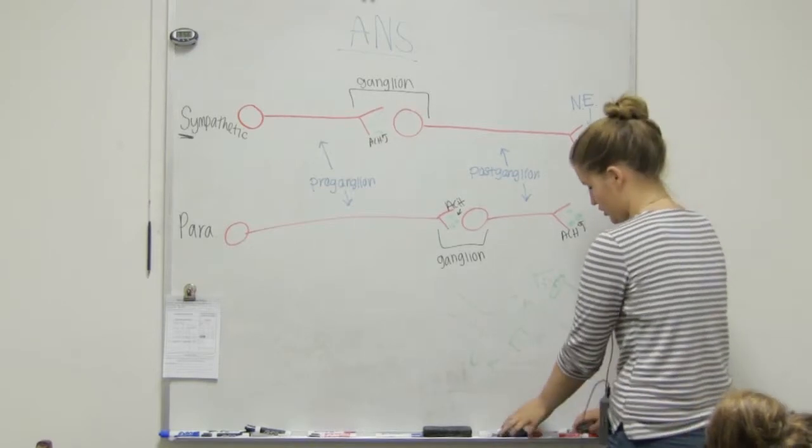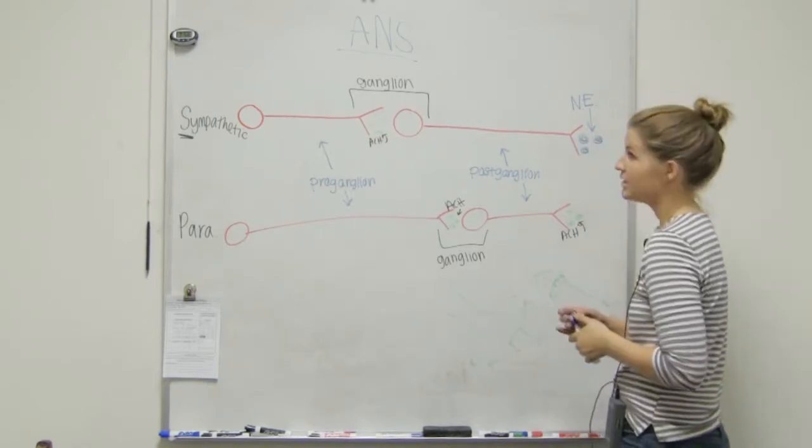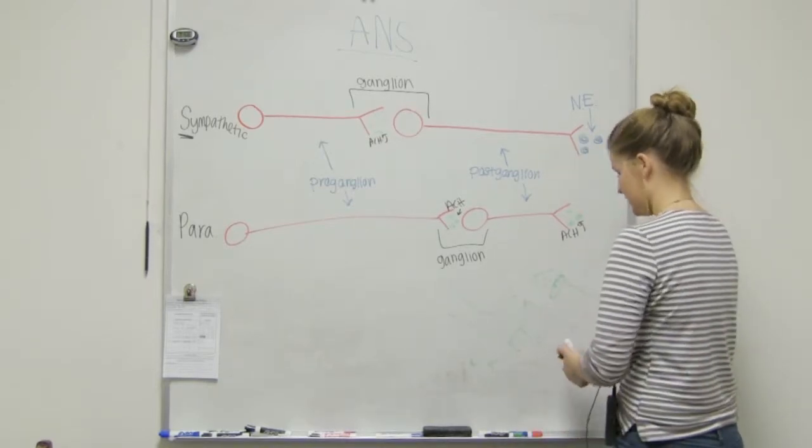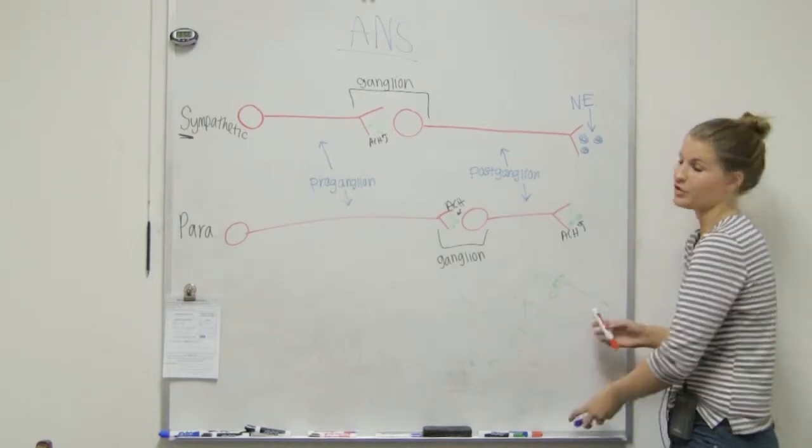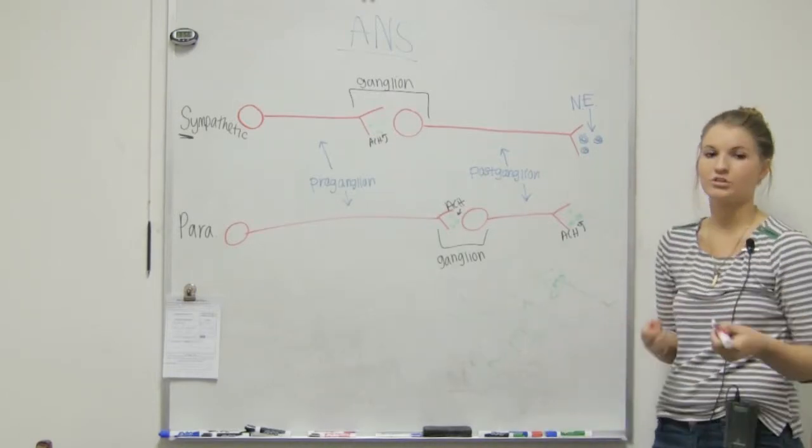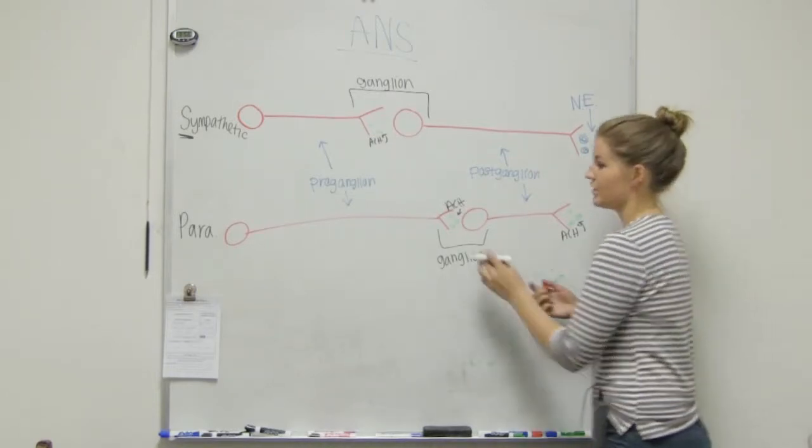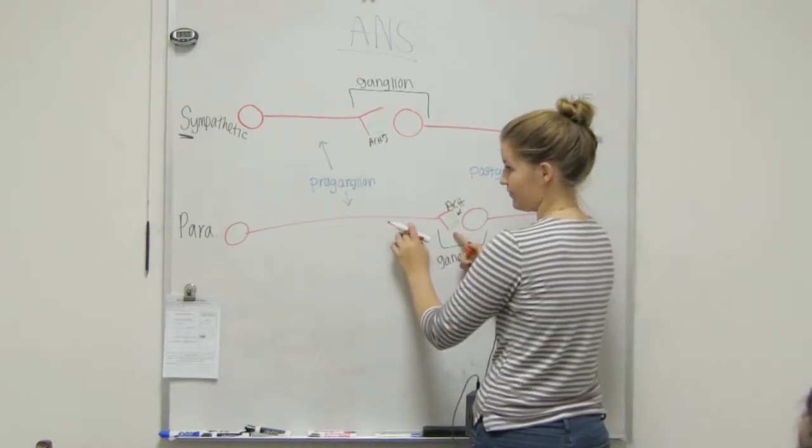And we call neurons certain names, depending on what they secrete. So, if a neuron secretes acetylcholine, we call it cholinergic. So, what do you think we'd call this neuron? Cholinergic. Yep.